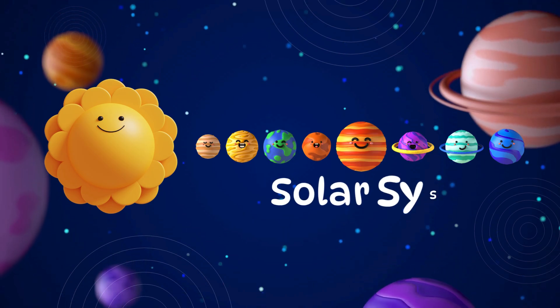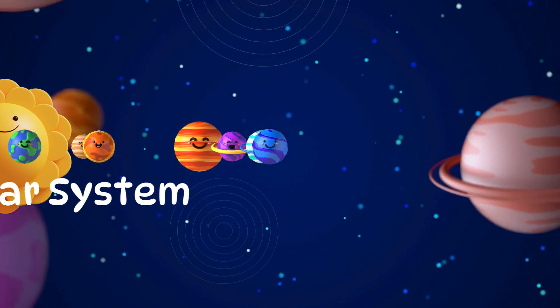The solar system is made up of the sun and everything that moves around it, the planets, moons, asteroids, and comets.